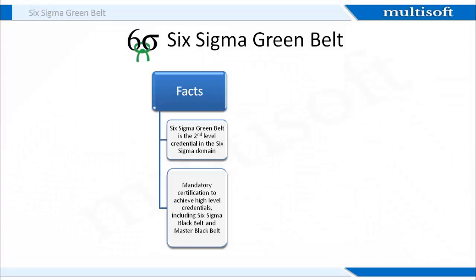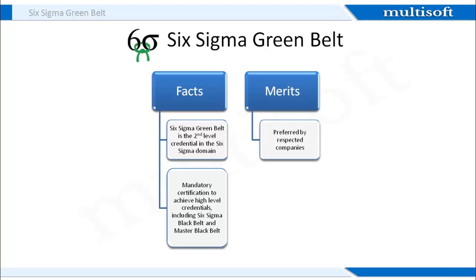A Six Sigma Green Belt career can be both challenging and fulfilling and encompasses many different job options. The Green Belt credential carries considerable weight in the business community and can give you an edge in landing highly desirable positions with some of the world's most respected companies. The principles of Six Sigma are so widely applicable that employees skilled in their use are aggressively sought after and highly valued. Professionals with Green Belt certification are thoroughly familiar with the basic tenets of Six Sigma and are able to apply its principles to their work on a daily basis.